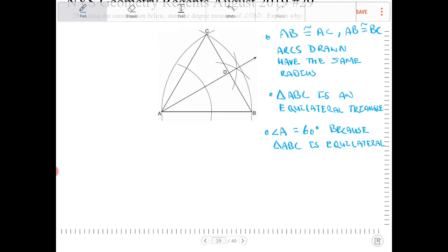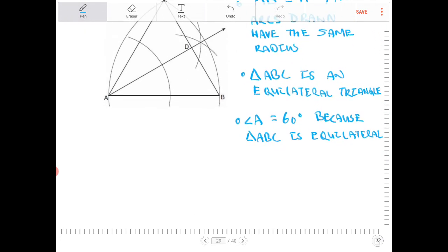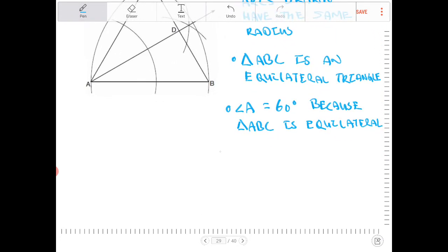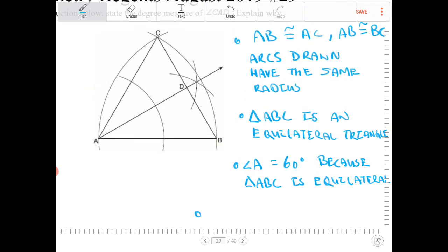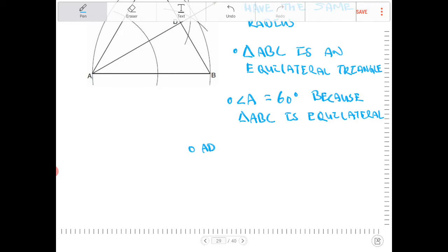Based on the construction marks there, angle CAD, or rather, AD is an angle bisector of angle A.